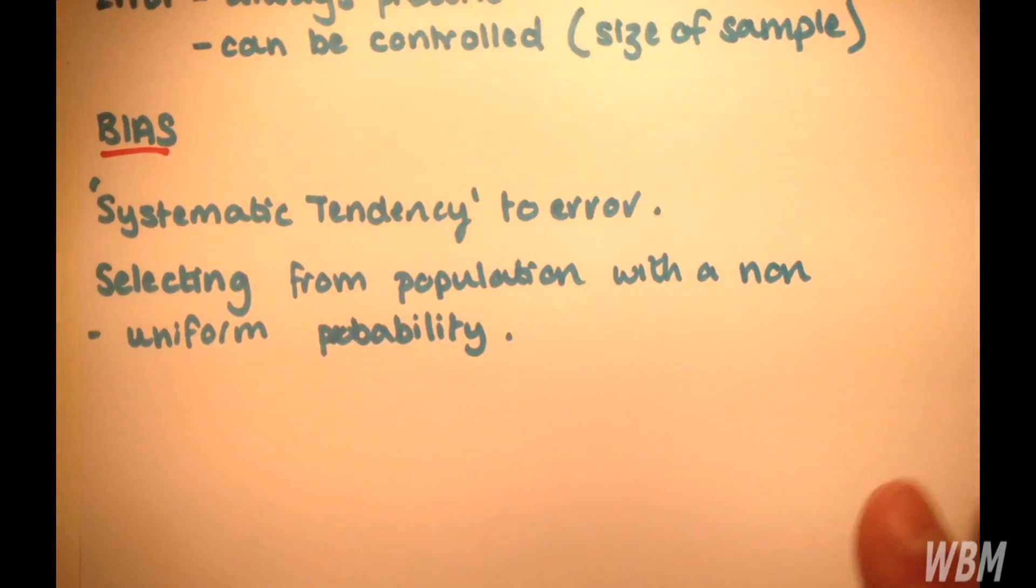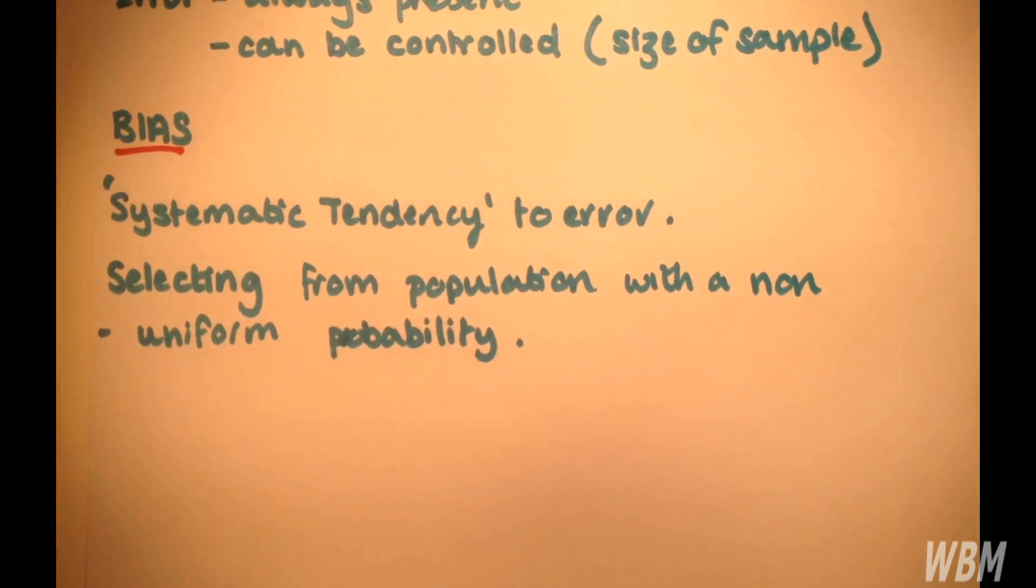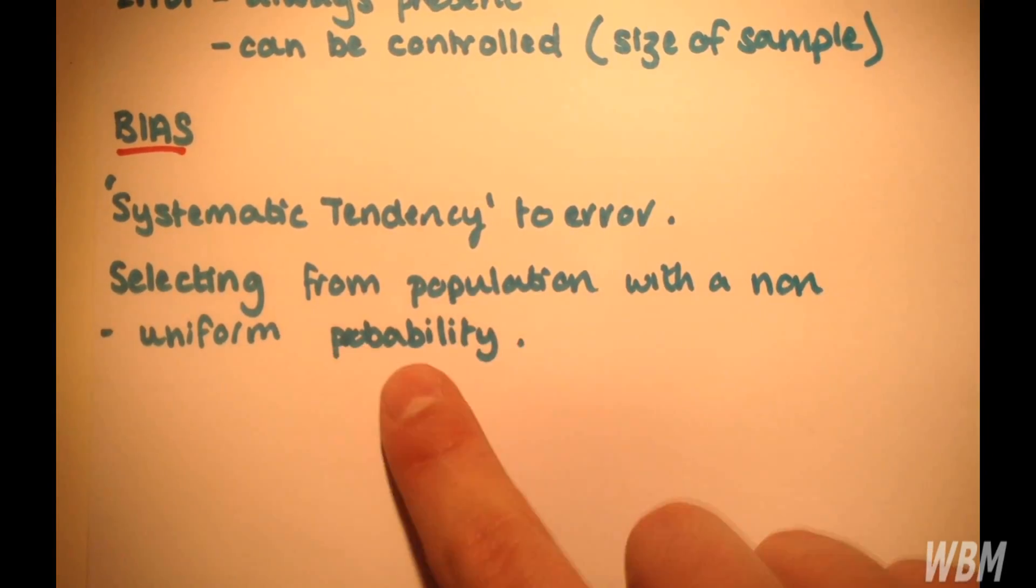A bias, on the other hand, is what we call a systematic tendency to error. This is created by selecting from the population with a non-uniform probability.